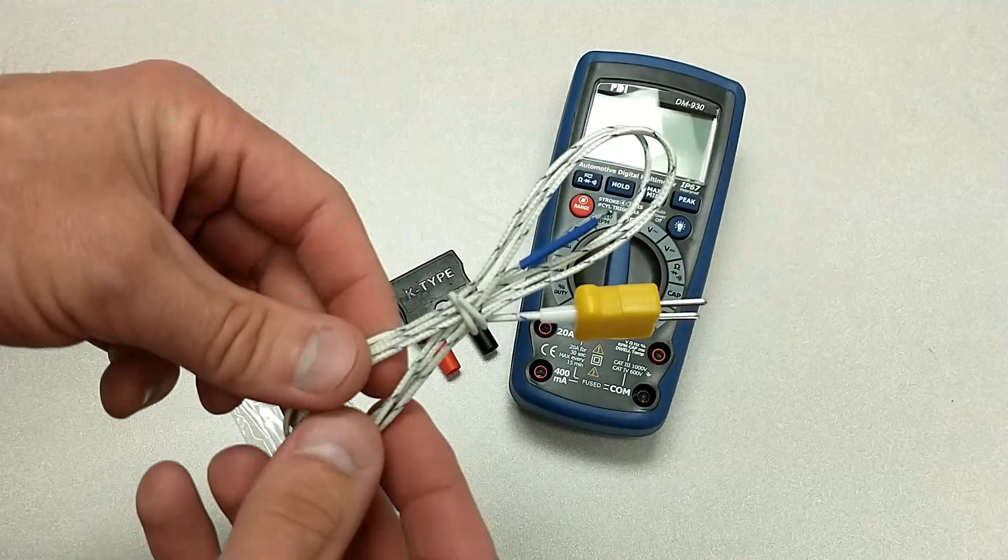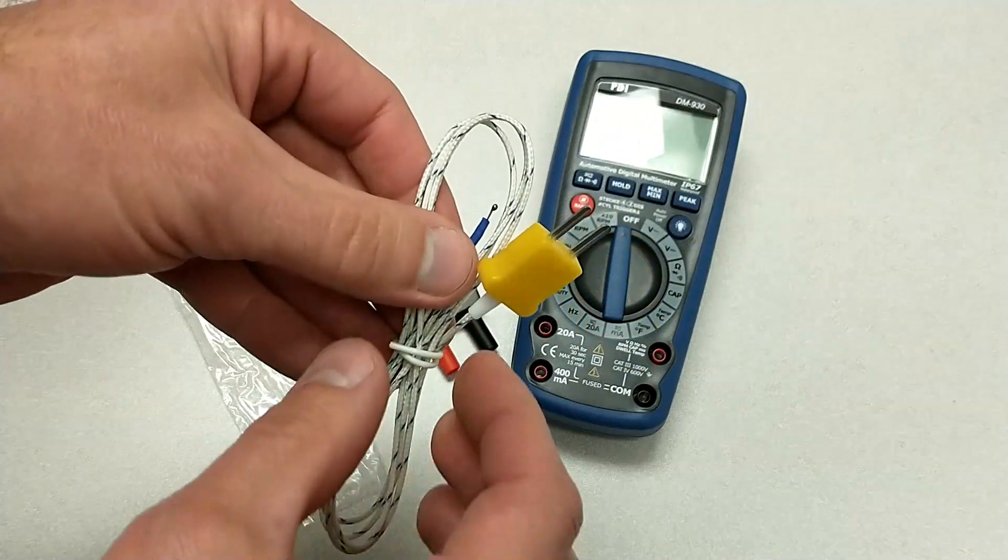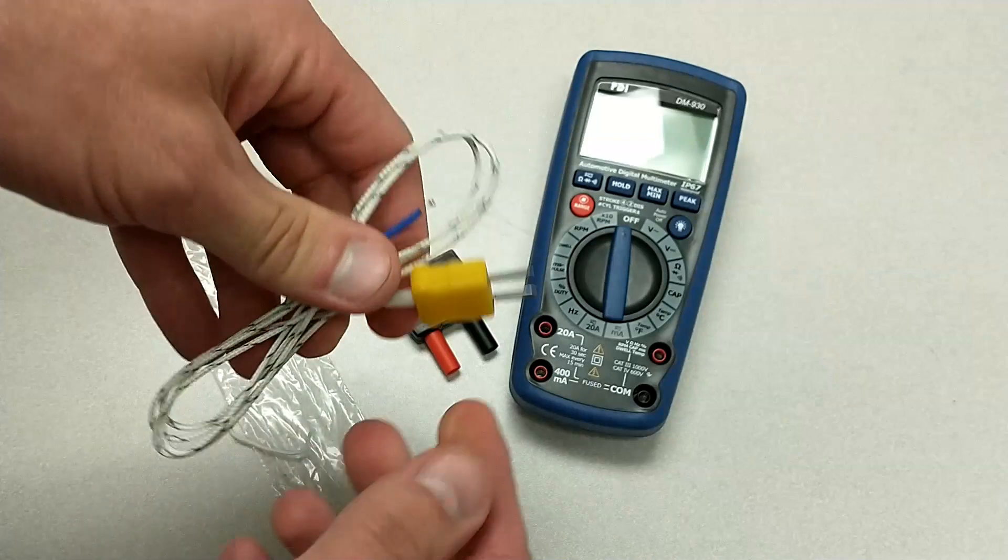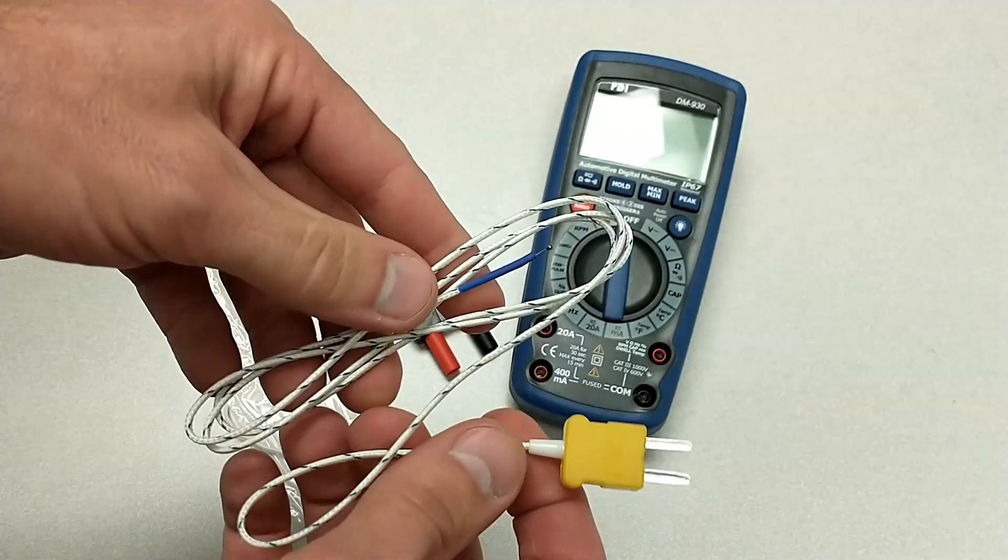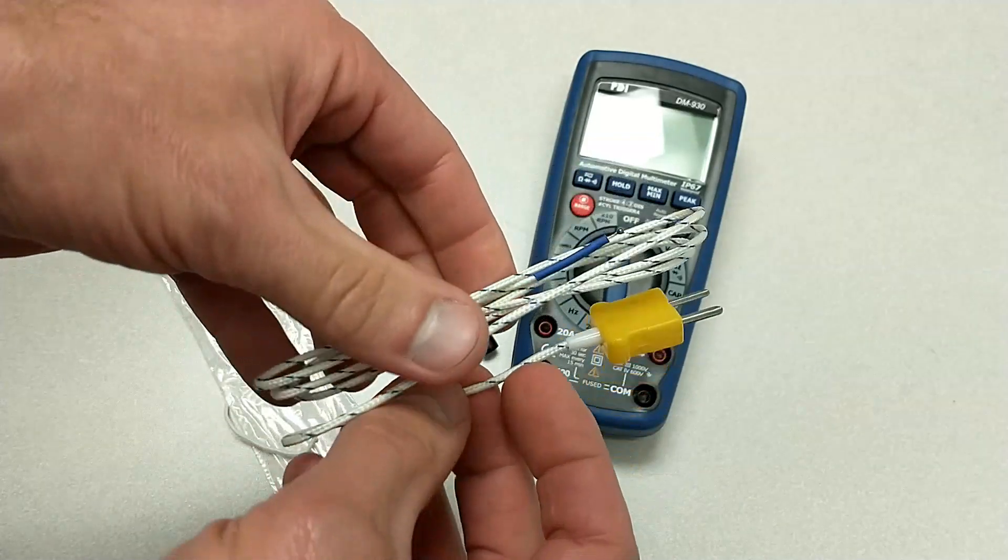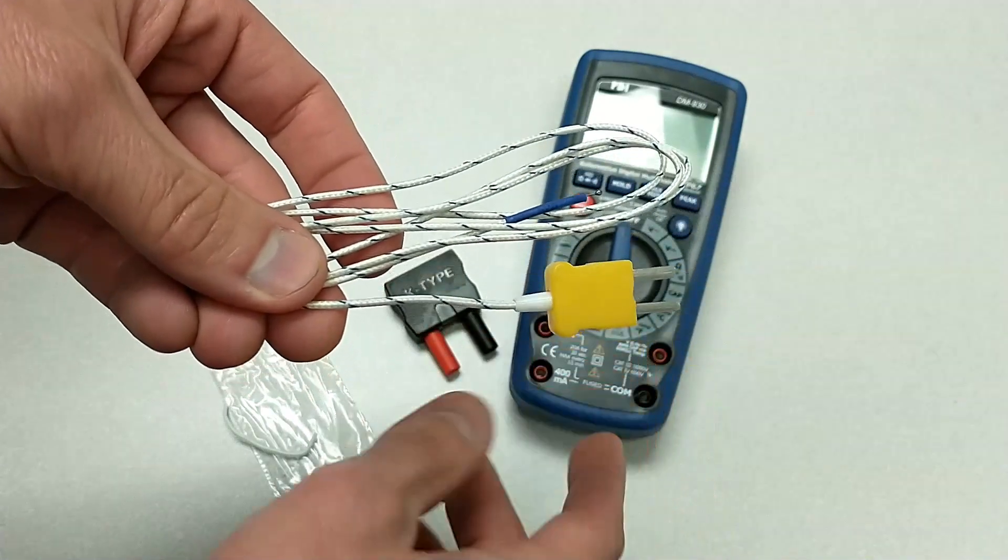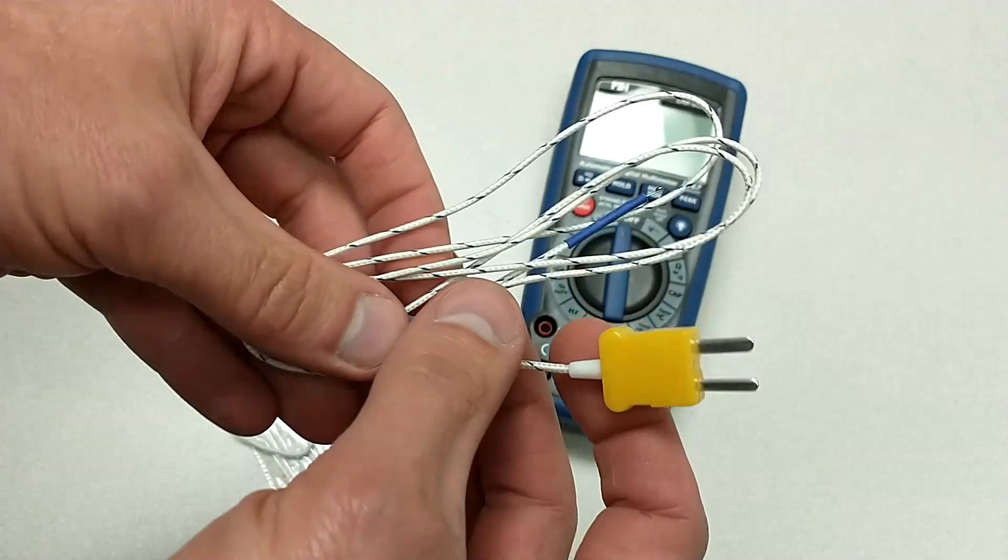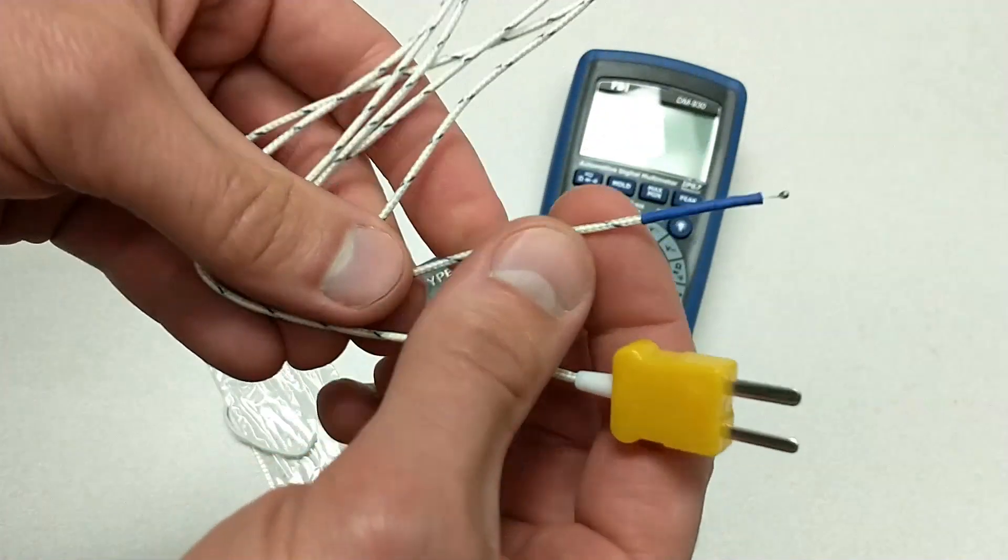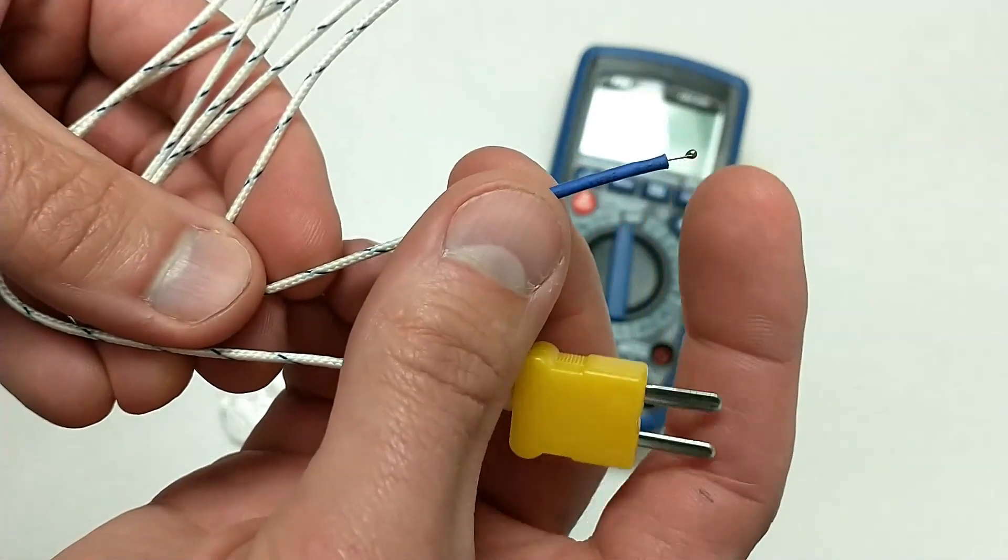But it does have a purpose. This is a thermocouple, and what it does is it allows you to measure temperature with your multimeter. Sometimes it looks like this, and sometimes it'll have a banana jack that'll plug directly into the multimeter. At the other end, it has a welded tip.